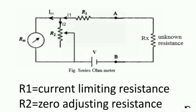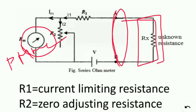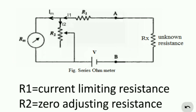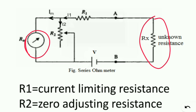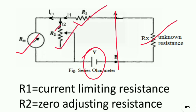Let's look at the circuit diagram. This is the PMMC meter — the PMMC instrument. Terminals A and B are the two measurement terminals. The unknown resistance is connected here, and we can calculate the unknown resistance from the reading.